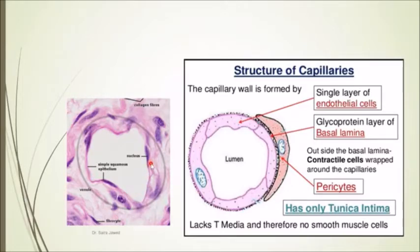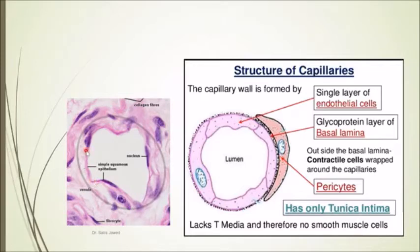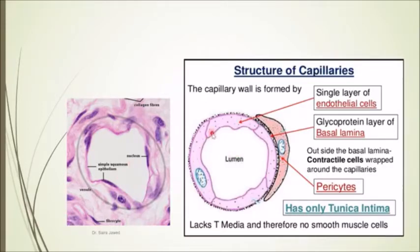To identify a capillary, you can see it has a smaller, irregular lumen compared to veins and arteries. It is lined with simple squamous epithelium. Apart from that, there is no other layer — no tunica media, no muscular layer, no tunica adventitia. Just a single layer of simple squamous epithelium with an irregular lumen.